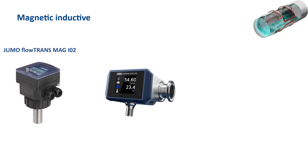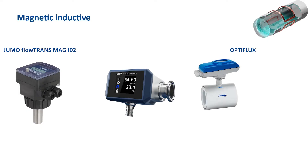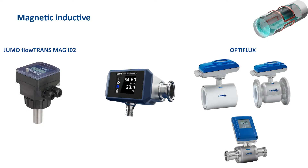The JUMO FluorTransMAC H20 is a magnetic inductive flow meter in compact design. This device features single pair Ethernet, can be configured via an app, and is suitable for accurate measurement of very small quantities. The third series is the Optiflux series, where three different devices are available covering a wide range of applications. The transmitter can be placed on the sensor as well as decentralized.